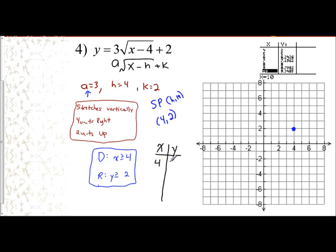My table is going to be my x column, my y column. Three nice ones, no decimals, all nice integers. 4, 2 is my starting point, so that's where my table is going to start. I have 5, 5, and I have 8, 8.